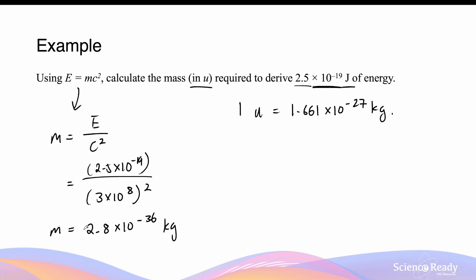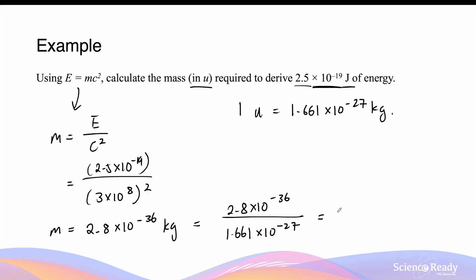We'll need to divide this number in kilograms by the number of kilograms in one atomic mass unit to find out how many atomic mass units this is equivalent to. So that's 2.8 × 10⁻³⁶ divided by 1.661 × 10⁻²⁷, and this gives us 1.67 × 10⁻⁹ atomic mass units.